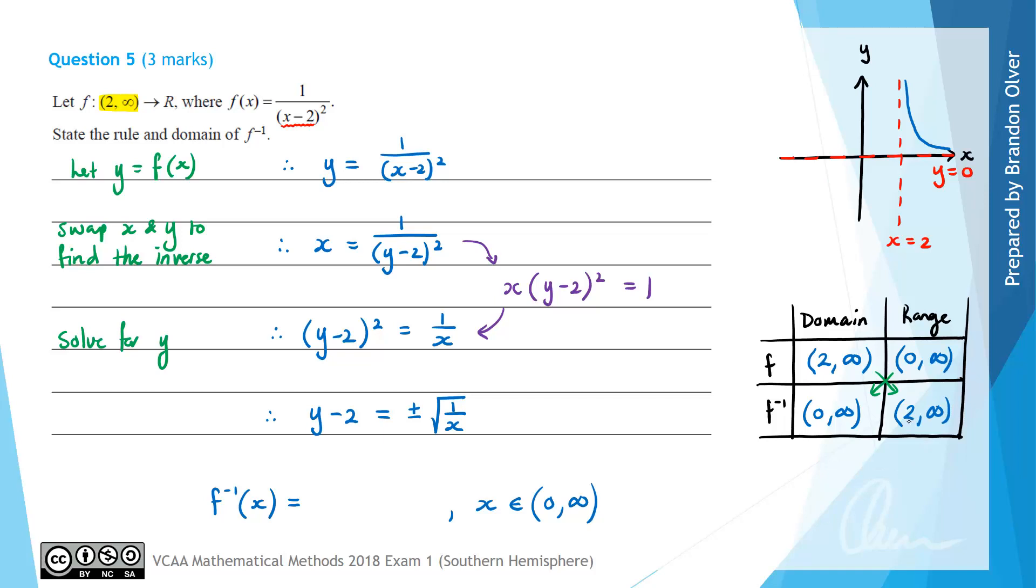The only way that we can get the function to go from 2 towards infinity is to select the positive square root so that means f inverse of x is going to equal the positive square root of (1/x) and then we add 2 to get y by itself and that is the rule that we were looking for. That is the answer to this question.